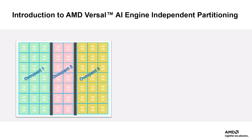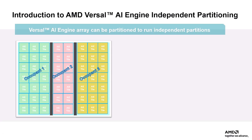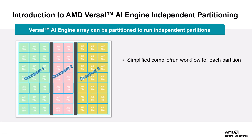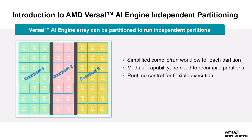With the release of 2025.1 Vitis tool, a significant improvement has been made to the way the AI Engine array is handled. Now, the AI Engine array can be partitioned to run independent partitions, which means you can manage and run each partition separately. This enables a simplified workflow for compiling and running each partition independently, leading to greater flexibility and modularity. Modular capability means that you don't have to recompile partitions repeatedly. Once you have the kernel compiled, you can manage each partition individually at runtime. This is a major enhancement because it gives runtime control over the partitions, allowing users to dynamically manage and control them according to the needs of their application.